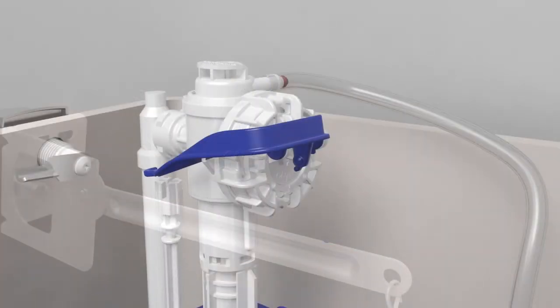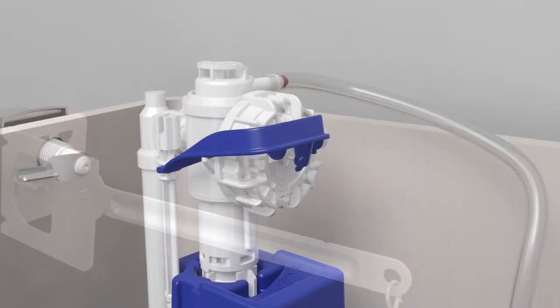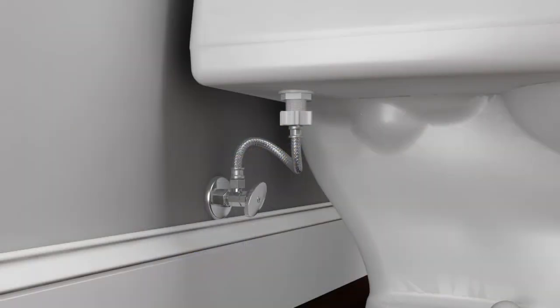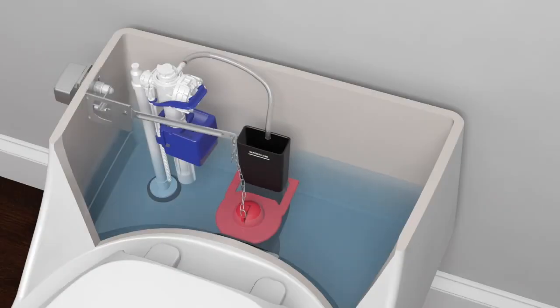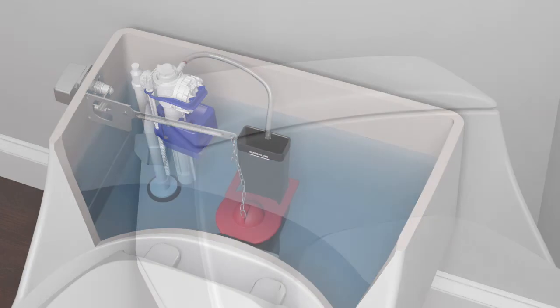Reattach the arm on the cap assembly to the fill valve adjustment screw. Turn on the water supply and allow the tank to refill. Flush the toilet to ensure proper fill valve operation.